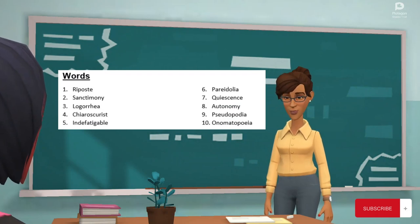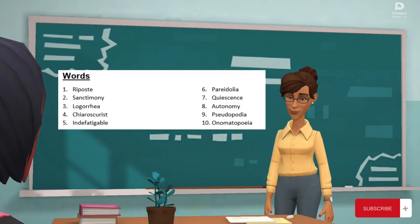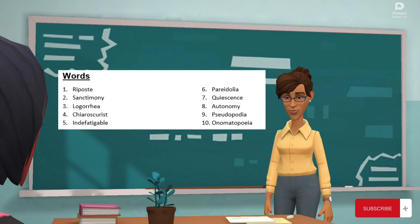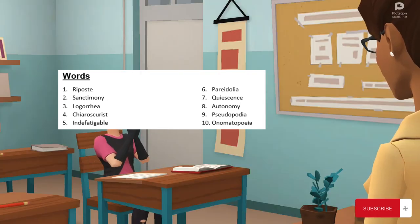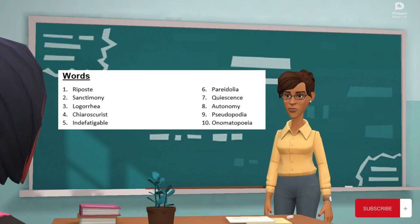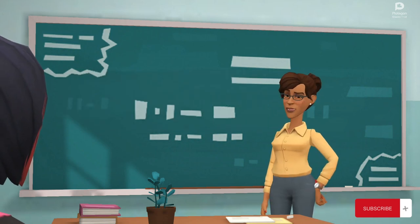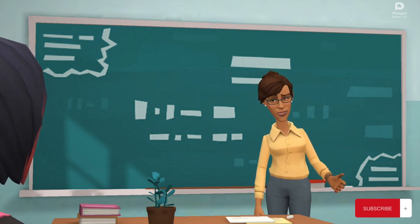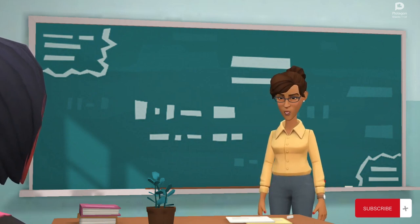On the blackboard, we see an array of 10 intriguing and uncommon words. Words like Sesquipedalian, Onomatopoeia, Laconic, and Quintessence stare back at the students, seemingly teasing their memory abilities. Your task is simple, yet challenging. Take a moment to carefully write down these 10 difficult words in the sequence they appear on the blackboard.